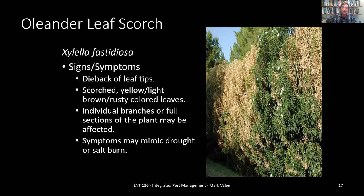Next, let's talk about oleander leaf scorch. Leaf scorch expresses itself in dieback of leaf tips — usually scorched yellow to light brown or rusty colored leaves. Individual branches or complete sections of the plant may be infected, as the image shows with some oleander looking perfectly fine while other sections look scorched. These symptoms may mimic drought or salt burn. If you drive through the San Diego freeways, oleander was once a very common freeway median, and if you observe these older oleander stands, you may now see oleander leaf scorch introduced throughout.